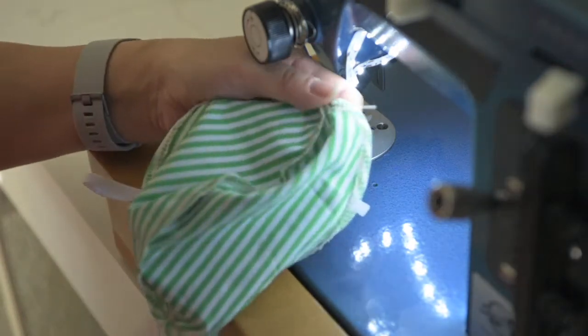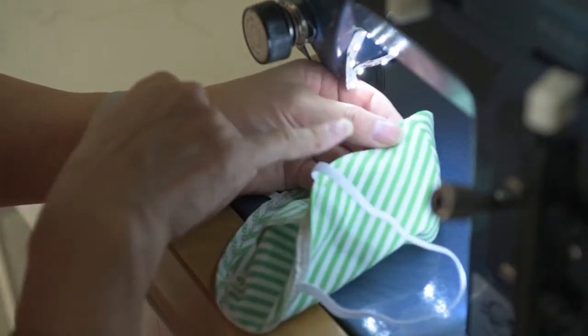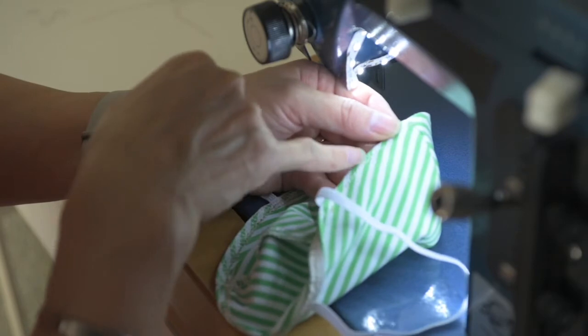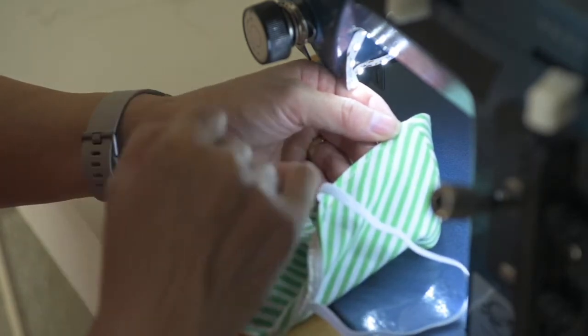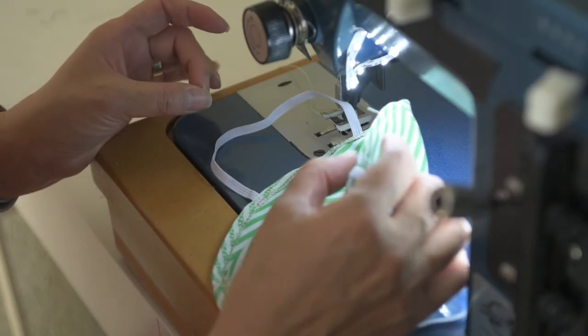For that last part, rather than backstitching, all I've done is overlapped my stitch over the beginning part so there's a little bit of overlap there. That saves you time from having to reverse.